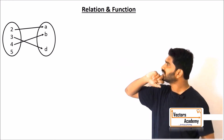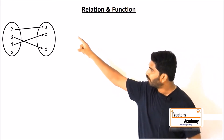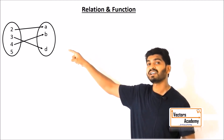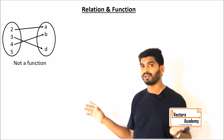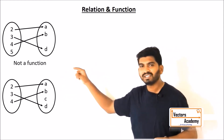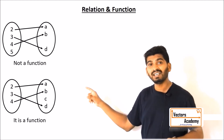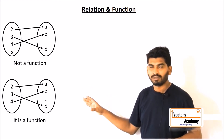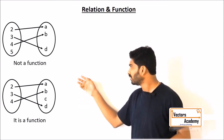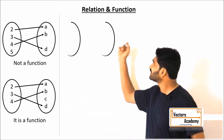We'll now identify whether each relation is a function or not. In the first example, one of the elements in the domain is not connected to any element in the range, so it is not a function. In the second example, all the elements are connected, so we can say it is a function. We only need to worry about all the elements in the domain being connected.